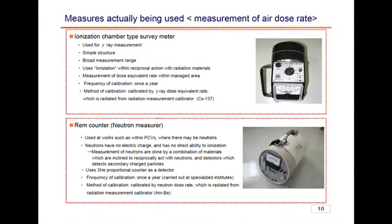We also use a special device, the aforementioned neutron type detector — the REM counter. Since neutrons do not ionize, we measure with a detector filled with a special material, helium-3. As this is a very special measurement instrument, we have an external expert organization calibrate it once a year.